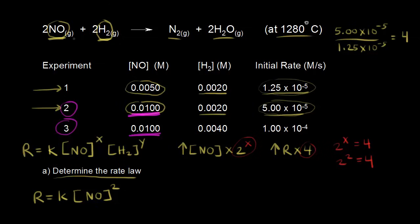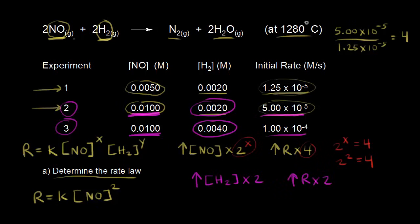The concentration of hydrogen has changed: it goes from 0.002 to 0.004, so we've increased the concentration of hydrogen by a factor of two. The rate went from 5×10⁻⁵ to 1×10⁻⁴ — so we've doubled the rate. If you divide 1×10⁻⁴ by 5×10⁻⁵ on a calculator, you'll see the rate goes up by a factor of two.